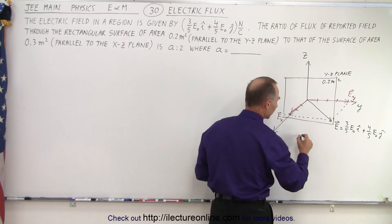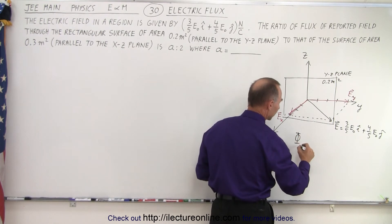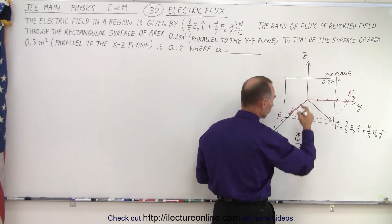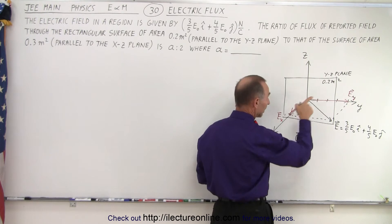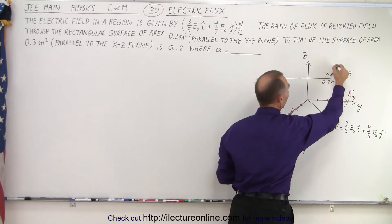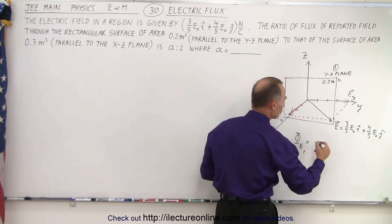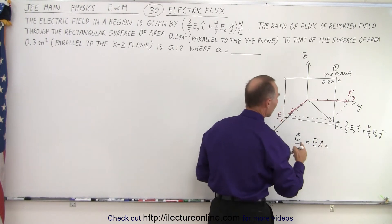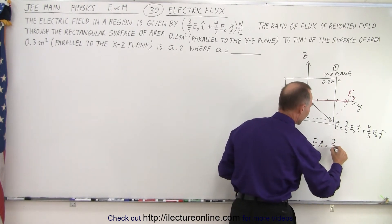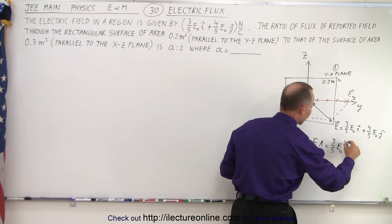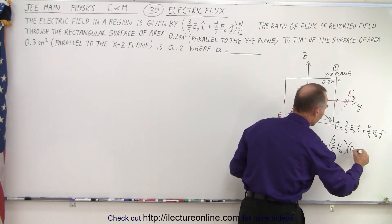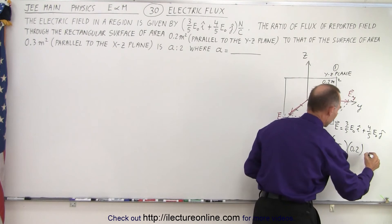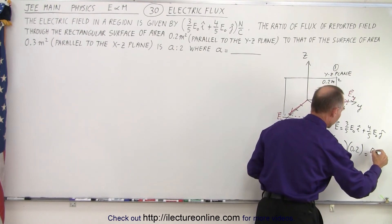The only component is the X component of the electric field that goes through that plane. So we can then say that the flux, the electric flux, going through, and I'll call it sub-1 for the X-Y plane. So this is the first plane. That's going to be equal to the electric field strength times the area. So in this case, that would be equal to 3/5 E₀ times 0.2 square meters. So this would be equal to 0.6 over 5 E₀.